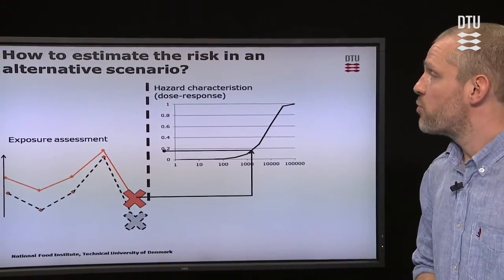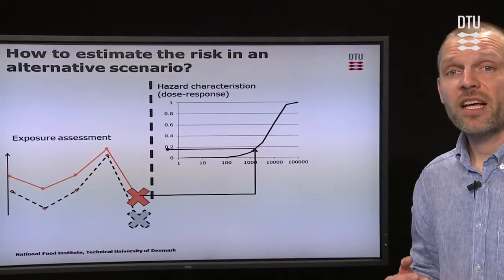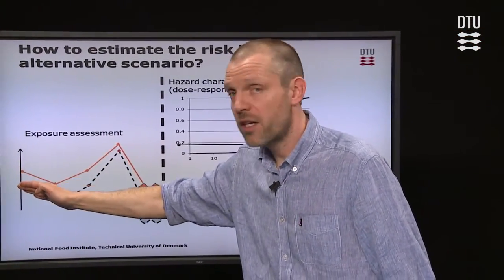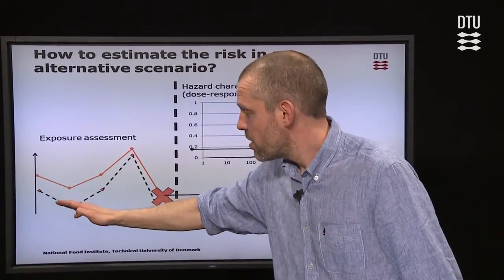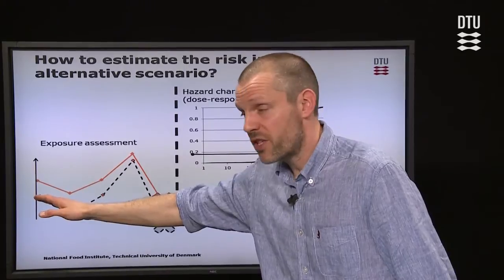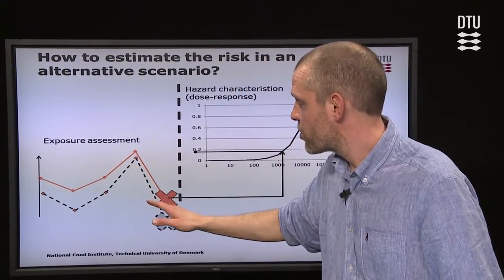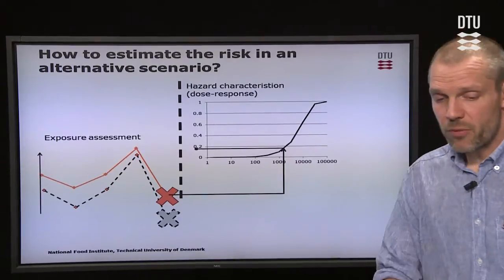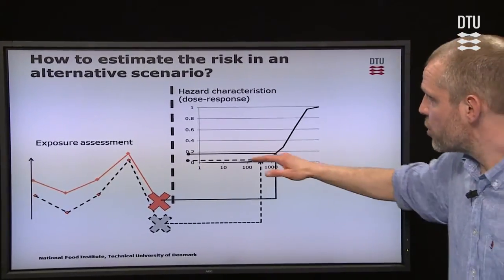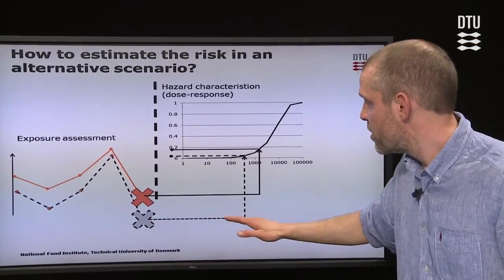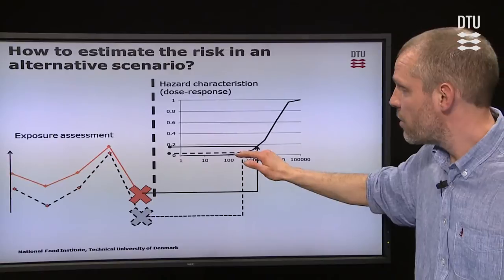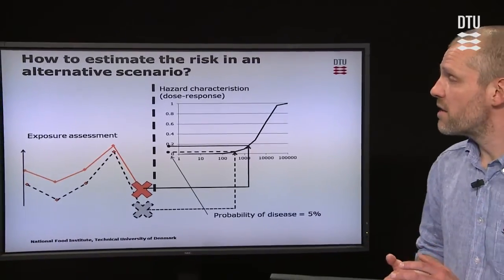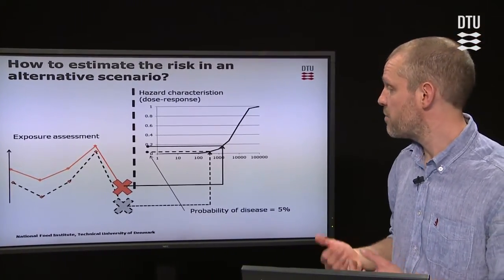This shows how you can estimate the risk in an alternative scenario. If we implement a control measure at the primary production — very early in the production line — we lower the concentration. We have a mathematical model for the exposure assessment describing what happens with the pathogen along the production line, and the predicted amount of CFUs will now be lower. We use the same dose-response relationship but with the new, lower exposure, and we read out a lower probability — in this case, 5%.